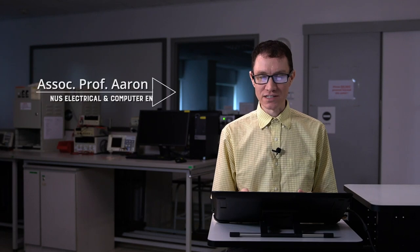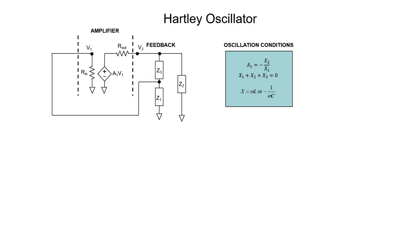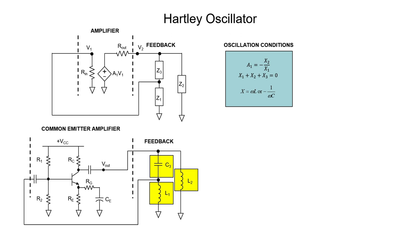A Colpitts oscillator had two capacitors and one inductor in the feedback path. A Hartley oscillator is very similar to a Colpitts oscillator except that it has two inductors in the feedback path and one capacitor.